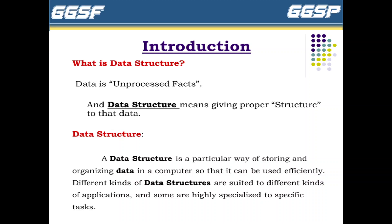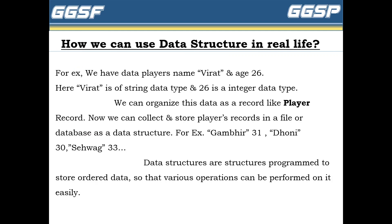So let's see the definition of data structure. A data structure is a particular way of storing and organizing data in a computer so that it can be used efficiently. Different kinds of data structures are suited to different kinds of applications, and some are highly specialized to specific tasks. We need to store data and organize it so that we can access it efficiently — that's why we need data structure.